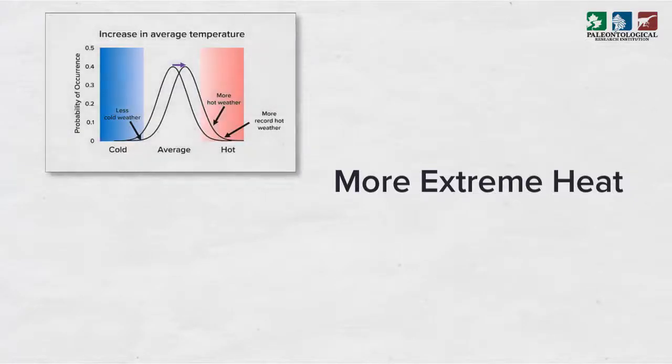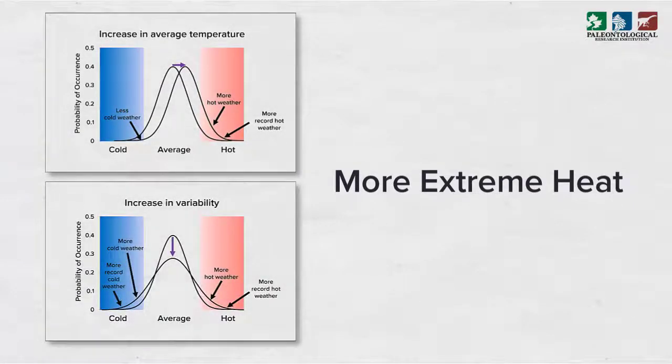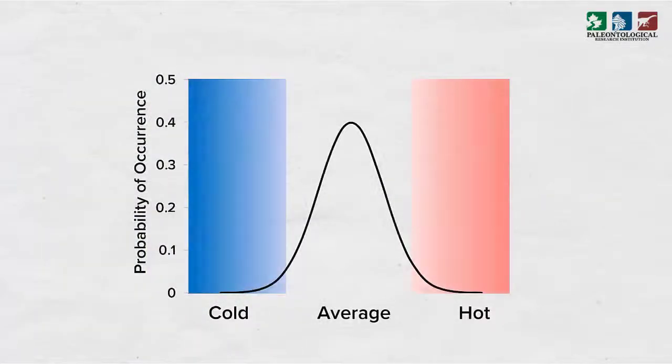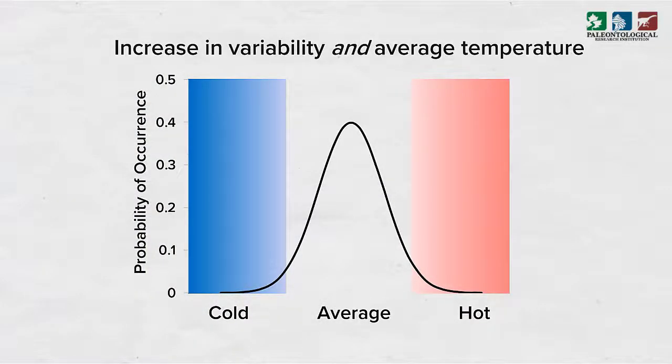So we can experience more extreme heat if either the average temperature shifts upward or temperatures become more variable. What if temperatures become more variable and the average temperature increases? Then the distribution of temperatures will both spread out and shift toward warmer temperatures.